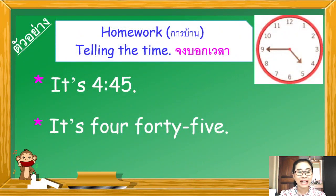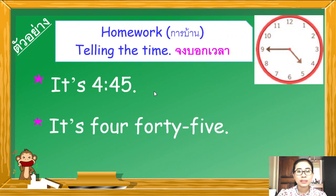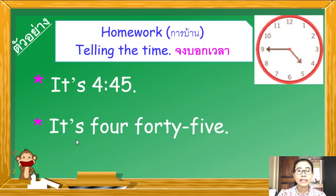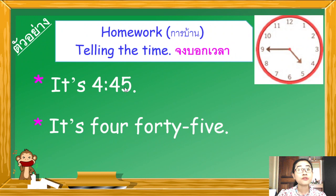ไม่ยากใช่ไหมคะ ต่อไปดู homework ค่ะ Telling the time จงบอกเวลา นี่เป็นตัวอย่างนะคะ Look at the picture เข็มสั้นชี้เลข 4 เข็มยาวชี้เลข 9 เป็นเวลา 45 นาที เขียน It is 4.45 และเขียนเป็นตัวอักษรว่า It is four forty-five. Don't forget full stop mark.